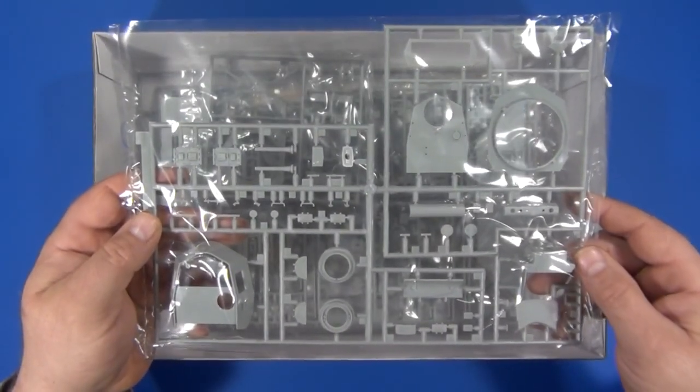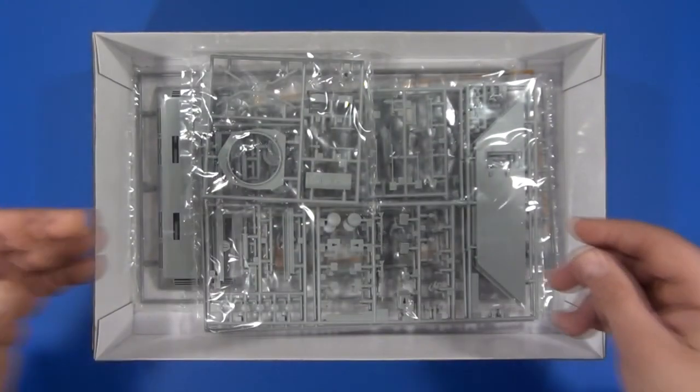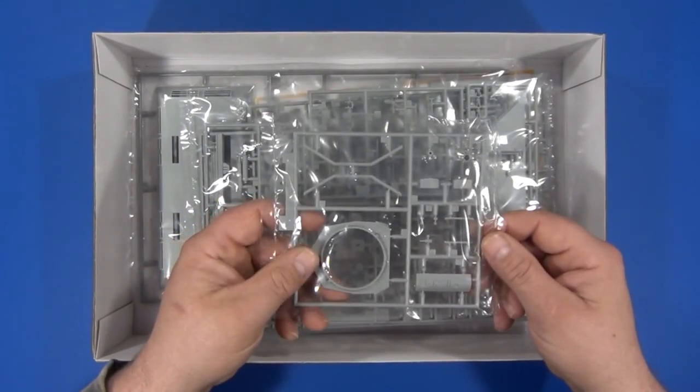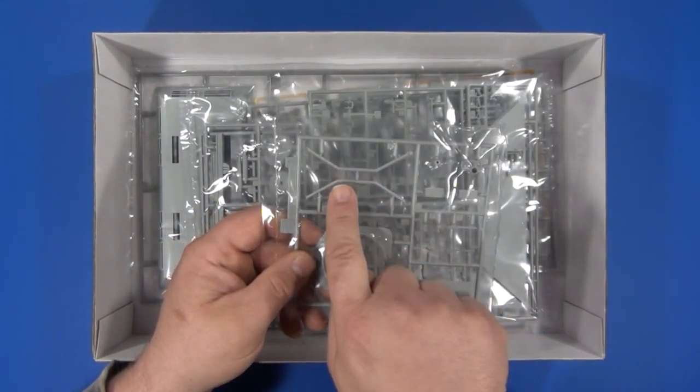Here are all the turret components. This little sprue here also contains some turret components in addition to bullet splash guards.